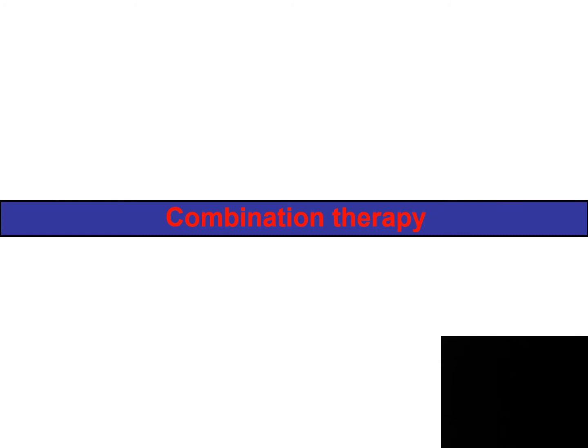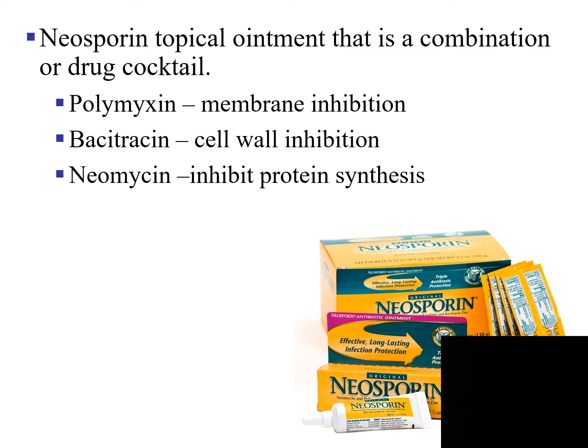Now we're going to look at how these drugs are administered. Most of these drugs are administered in combinations. We're going to talk about combination therapy. The first cocktail of drugs is neosporin. Everybody has neosporin in their medicine cabinet. This is a topical ointment and it is a combination of several drugs — a drug cocktail. Listed below are several drugs included in neosporin. Polymyxin destroys cells by inhibiting the membrane.